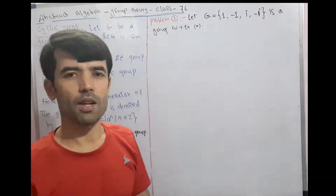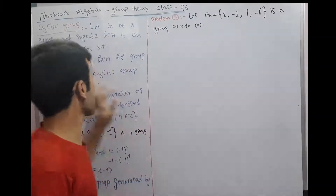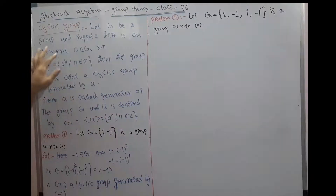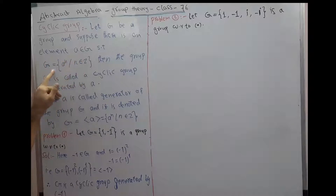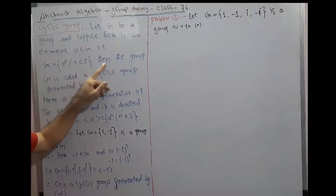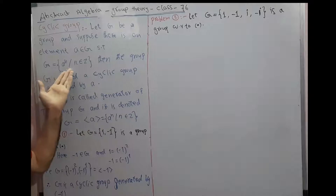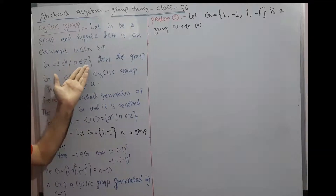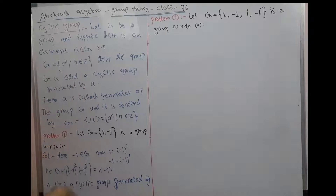Welcome to the abstract algebra class. It is class 76. In this class we will define cyclic group. Here is the definition: let G be a group, and suppose there is an element a belonging to G such that G equals {a^n | n ∈ Z}. Then the group G is called a cyclic group. Every group which we can write as a^n for n ∈ Z is called a cyclic group. Here a is called the generator of G.